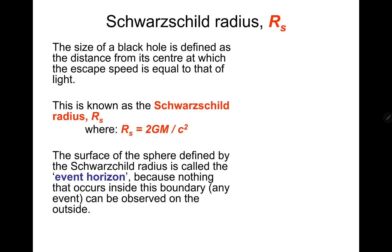So the surface of the sphere defined by the Schwarzschild radius is also called the event horizon, because nothing that occurs inside this boundary can be observed on the outside. And that's the simple fact that light cannot escape with the information. So we can't see anything. Hence the name black hole.